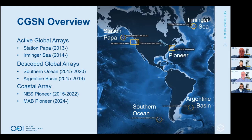Finally, the coastal array — the New England Shelf Pioneer Array — is currently installed off of New England. It will operate through about 2022, then be relocated to the southern mid-Atlantic Bight, or MAB, starting around 2024. There's a little more detail on that later in the slides.